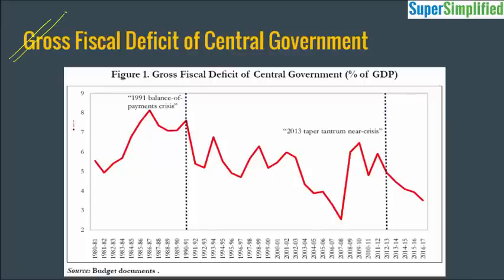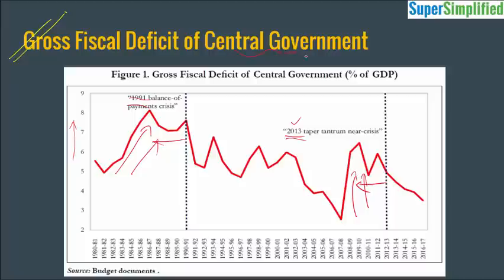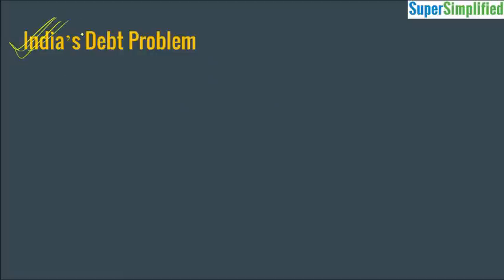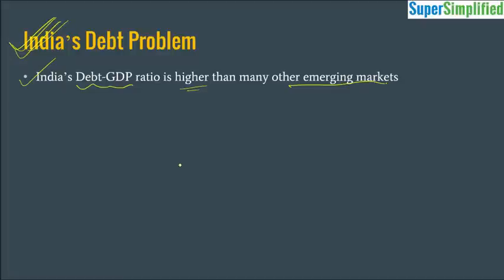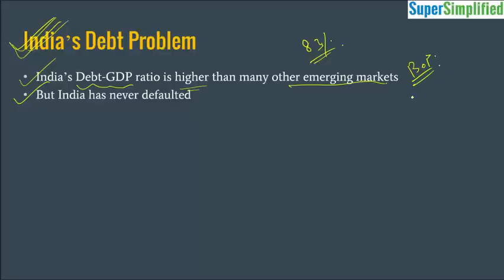Looking back at history, economic survey has plotted fiscal deficit on the y-axis and timeline on the x-axis. India has faced two crises recently — the 1991 balance of payments crisis and a near-crisis in 2013. In the preceding years of each crisis, we see a sudden rise in the fiscal deficit. So whenever fiscal deficit rises suddenly, after a few years we face an economic crisis. That is India's bitter experience. India's debt to GDP ratio is higher than many emerging markets, but India has never defaulted. At its highest level, debt reached around 83% of GDP. During the 1991 crisis, gold from RBI was flown in a special plane and placed in the vaults of the Bank of England as collateral to demonstrate India's seriousness about its debt obligations.